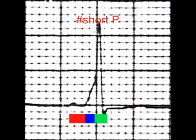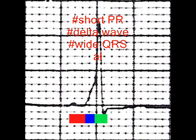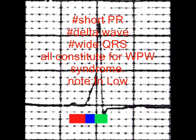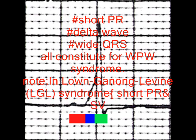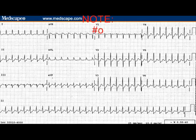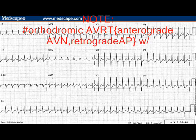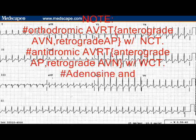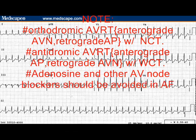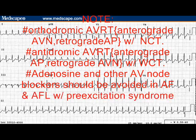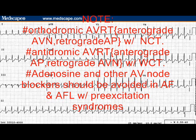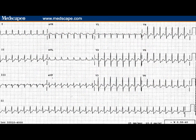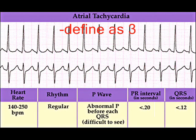AVRT is the second most common form of PSVT and is associated with Ebstein anomaly. Patients with AVRT are at risk for developing sudden cardiac death. The short PR interval, delta wave, and wide QRS are characteristic of WPW syndrome, but not in Lown-Ganong-Levine syndrome where there is no delta wave. Note that orthodromic AVRT uses the AV node anterograde while the accessory pathway is retrograde, and in antidromic it is the reverse. Adenosine and other AV node blockers should be avoided in AF or AFL with pre-excitation syndrome.